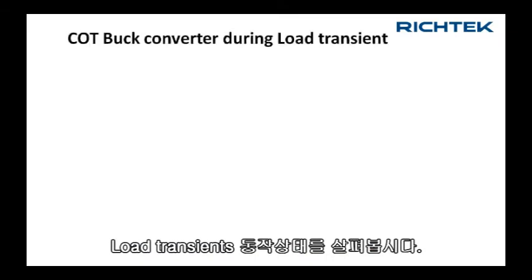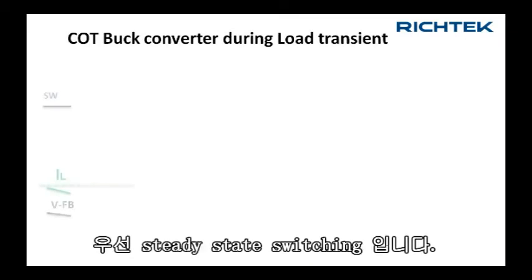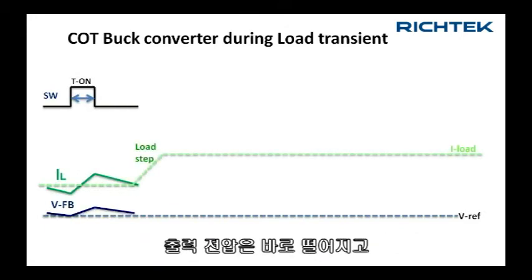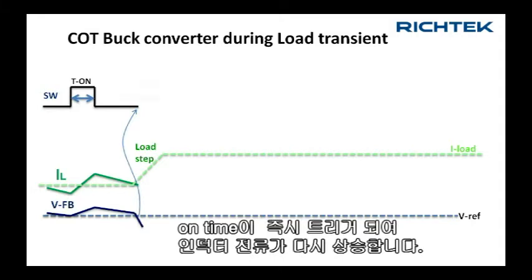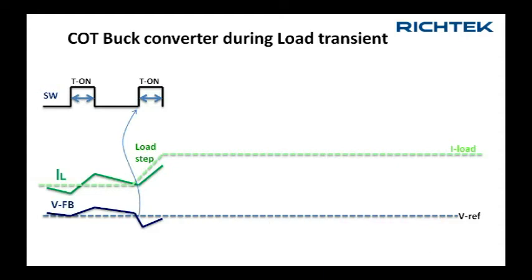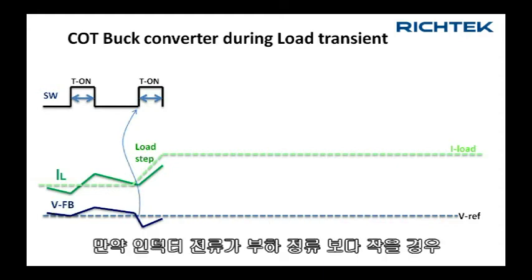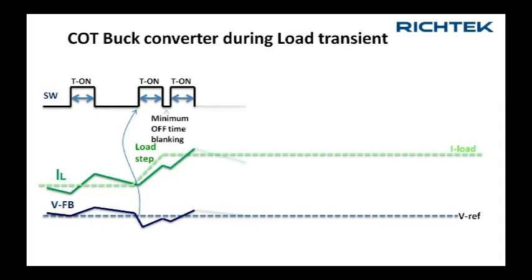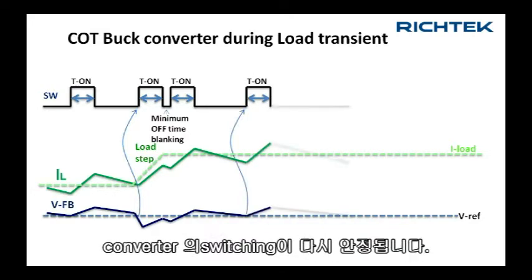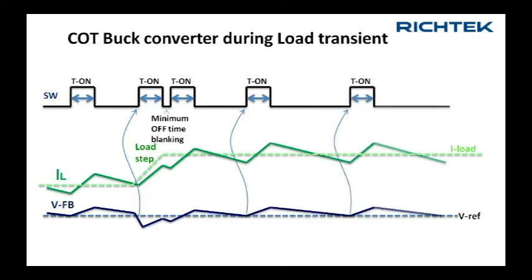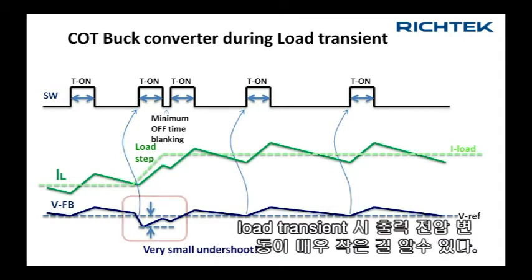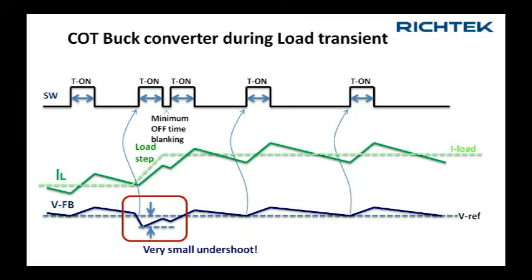Now let's see what happens during load transients. We start with steady state switching. When we suddenly increase the load, the output voltage drops quickly and almost immediately a new on-time is triggered and inductor current rises again. When this is insufficient to reach the new load level, another t-on is generated after a short blanking time. When the new load level is reached, the converter switching stabilizes again.